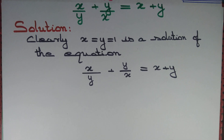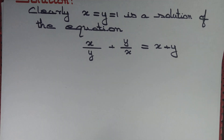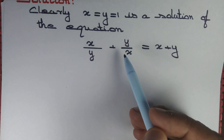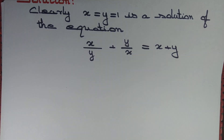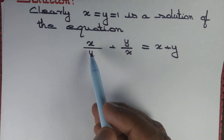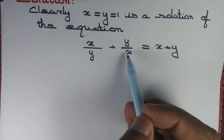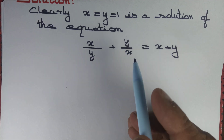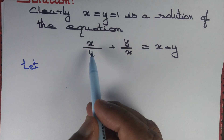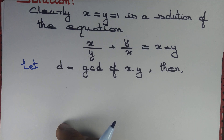Do we have another solution? We don't expect another solution. The reason being: we expect x/y to be a fraction and y/x to be a fraction, whereas x + y is an integer. Now, if x and y have anything in common, we can cancel it out. So let d denote the gcd of x and y, or highest common factor of x and y.